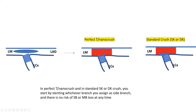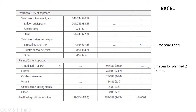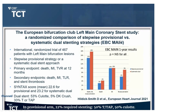Moving to data: even though there is an American fascination with DK crush, the data is actually weak for it. In the EXCEL trial, for provisional stenting, T and TAP were the biggest techniques at nearly 80%, and even in the planned two-stent strategy, T or TAP were applied in 50% of cases, CULOTTE in 23%, and crush was a minority at 14%. In EBC main, CULOTTE was used in 53% and T or TAP in 33% of planned two-stent cases, while DK crush was used in only 5%. In the NOBLE trial, 87% were distal left main yet two-stent strategy was only used in 35%, and the two-stent strategies used were CULOTTE first and T stent second — crush was the least used.